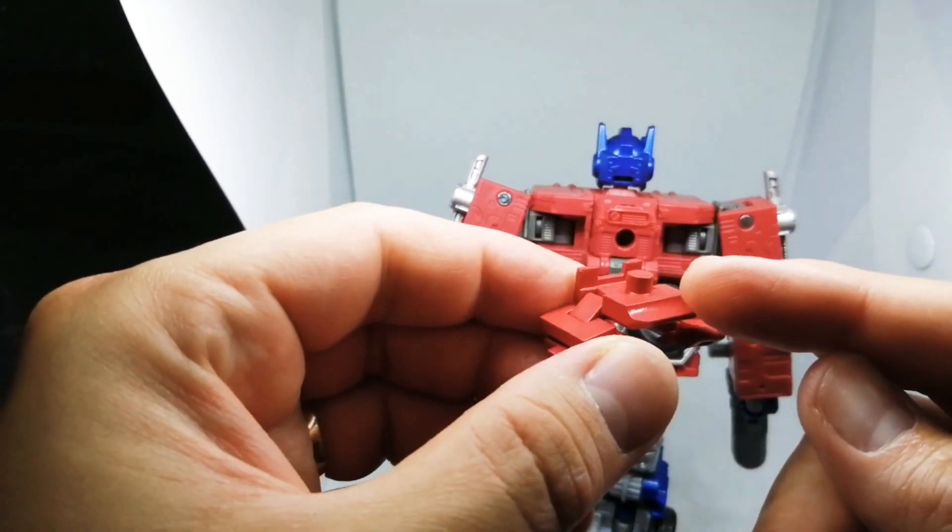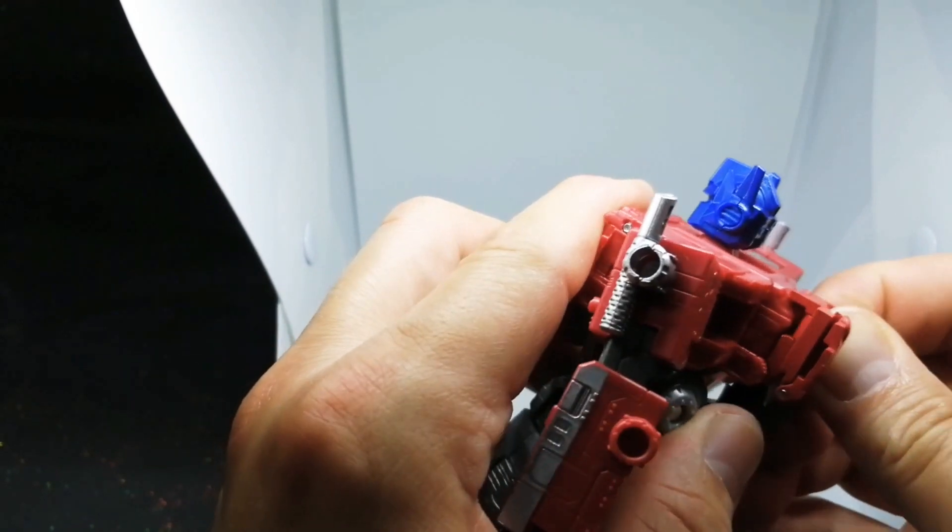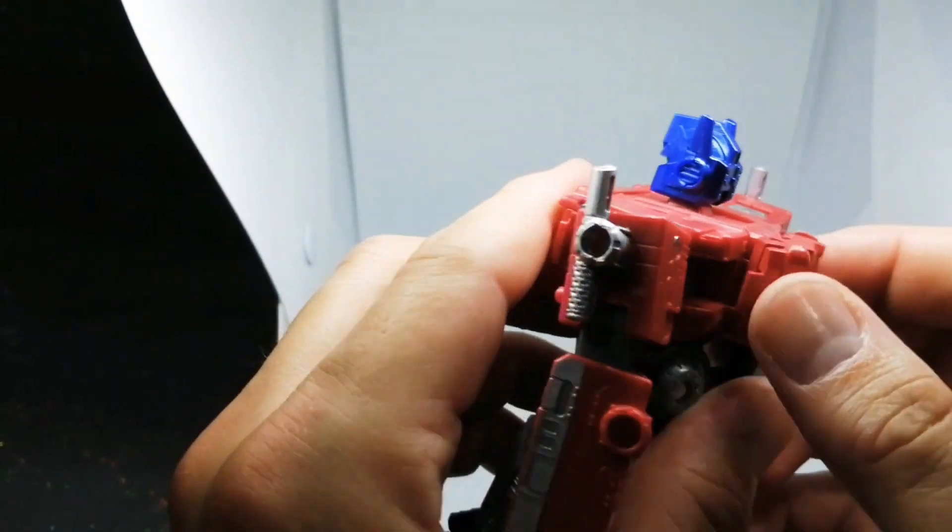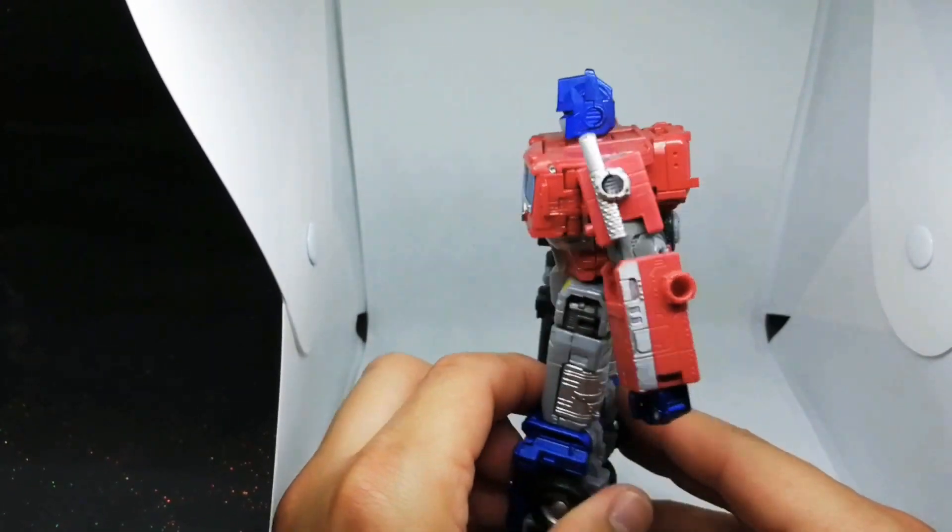So as you can see, this is how he looks before. And then you literally just get this, peg, line it up like so, spin that around.